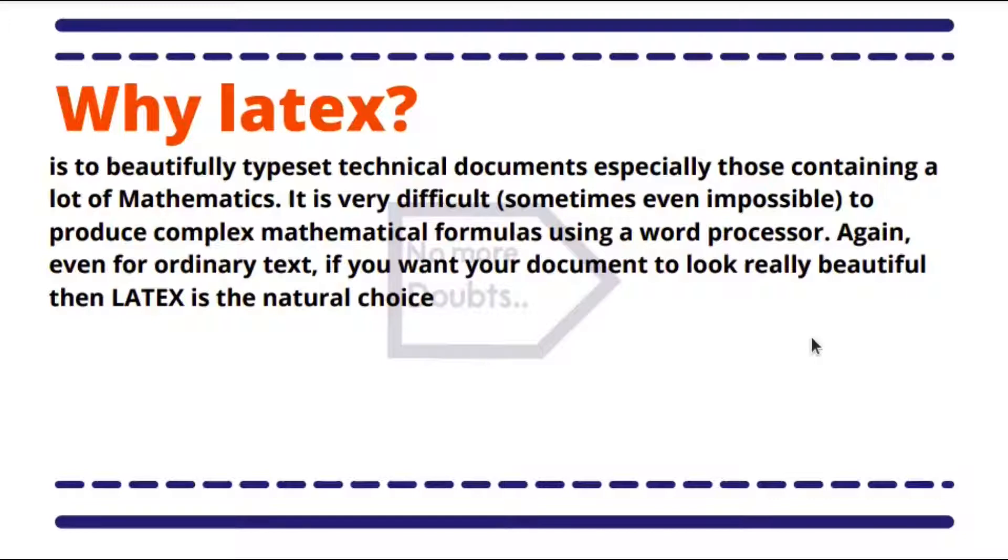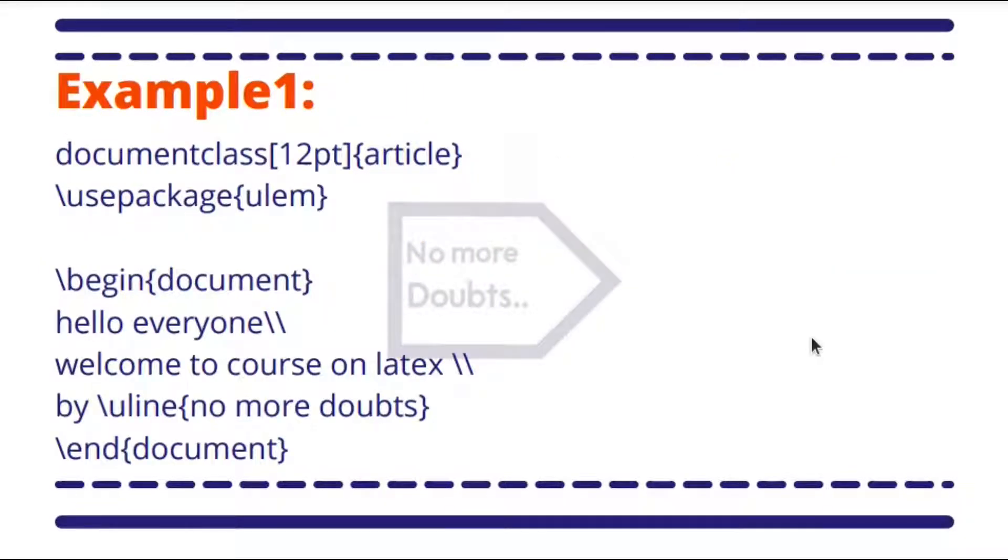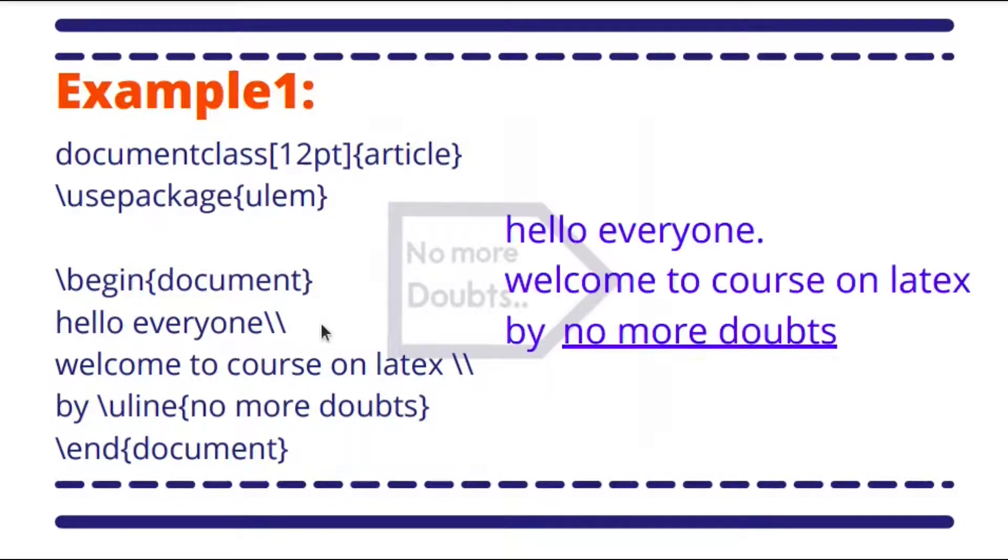We will see some examples now with LaTeX and we will understand why LaTeX is needed. Let's see this example here. This is an example typeset program. The output of this is 'hello everyone, welcome to course on LaTeX by no more doubts.' Here, documentclass[12pt]{article} means this is the first command line in the program. 12pt says that the entire document font size is 12 points, and this says the type of the document is article.